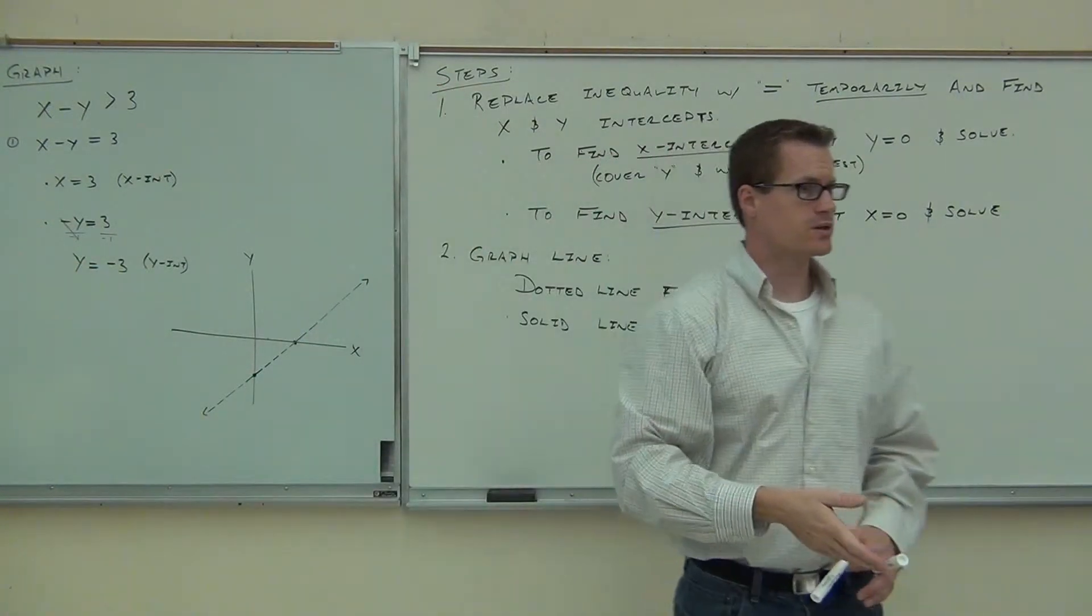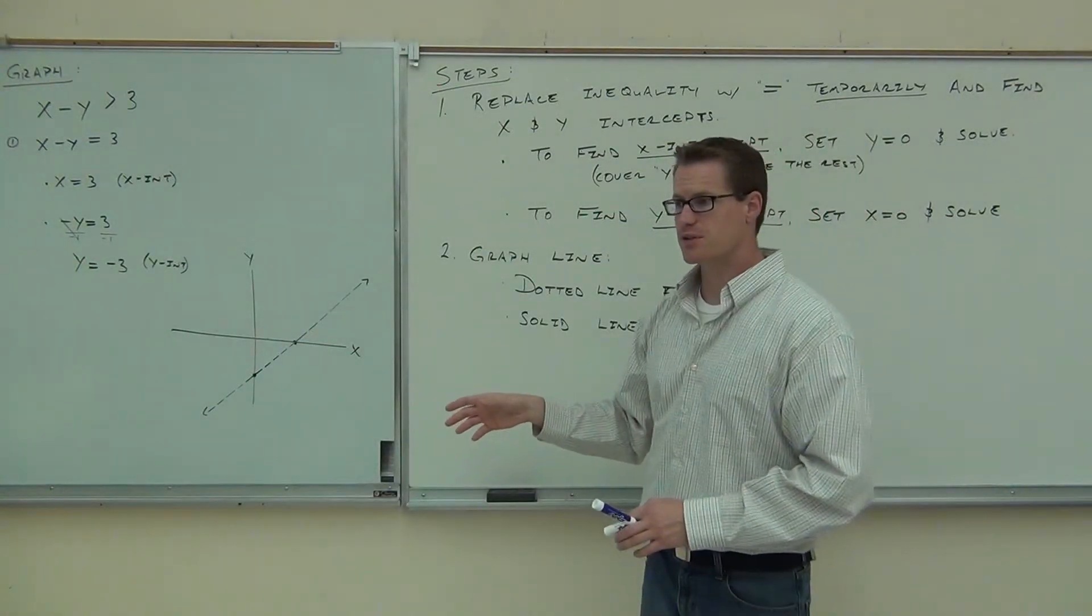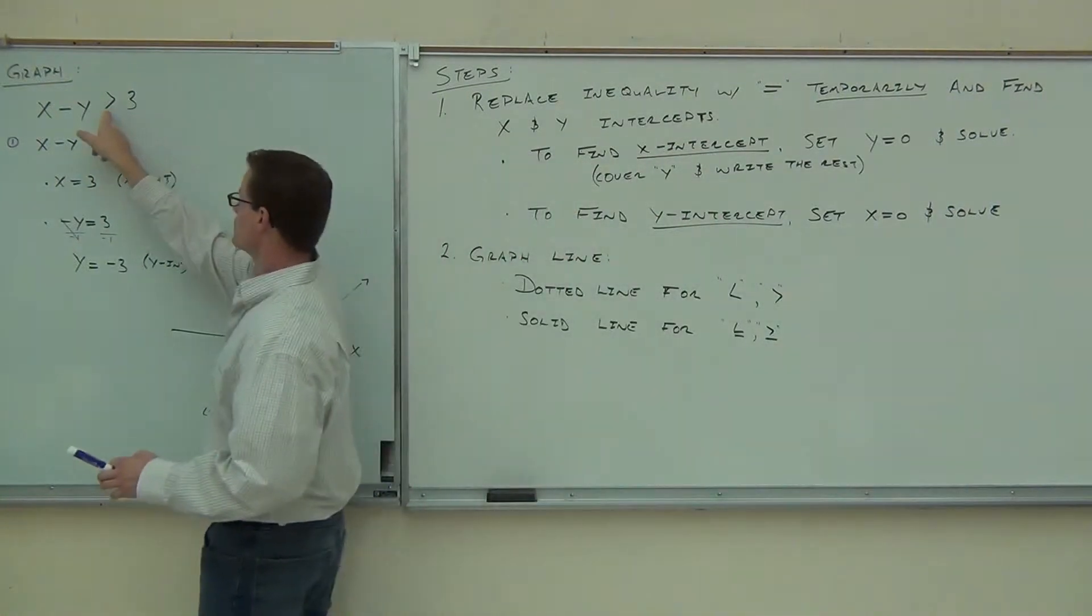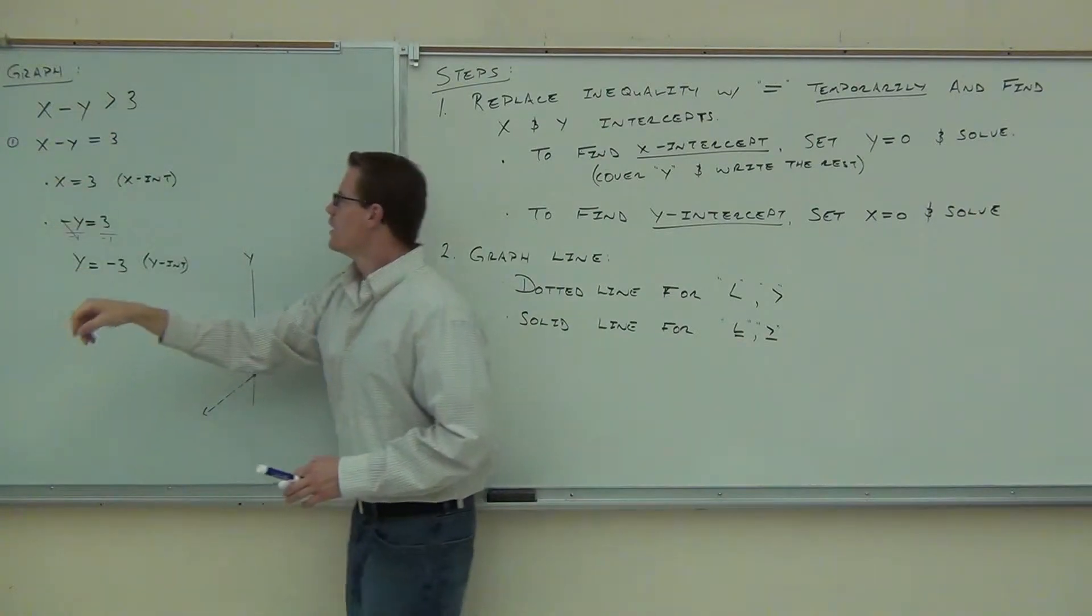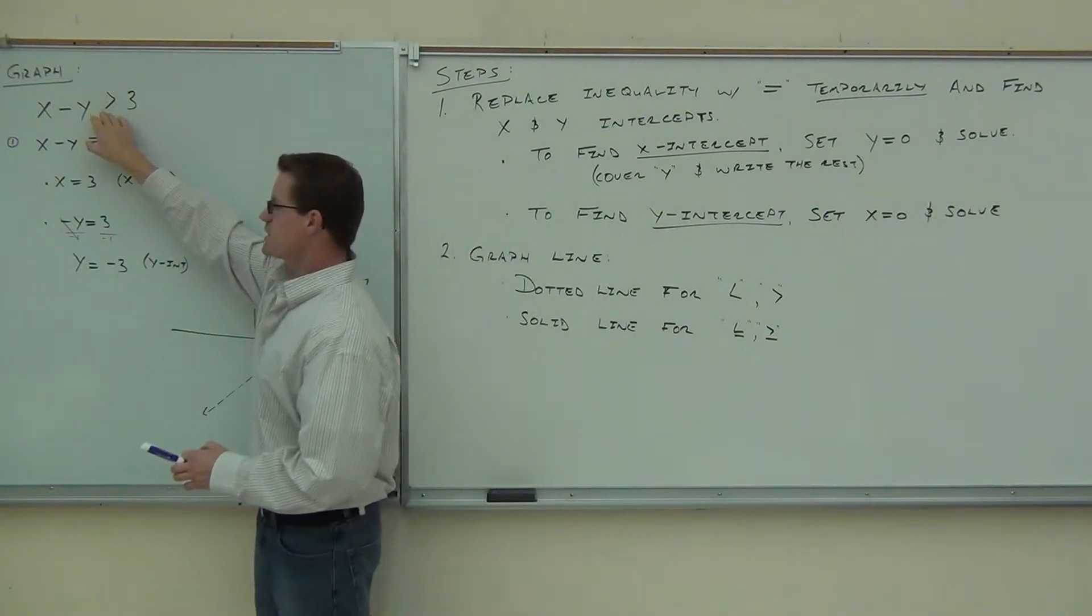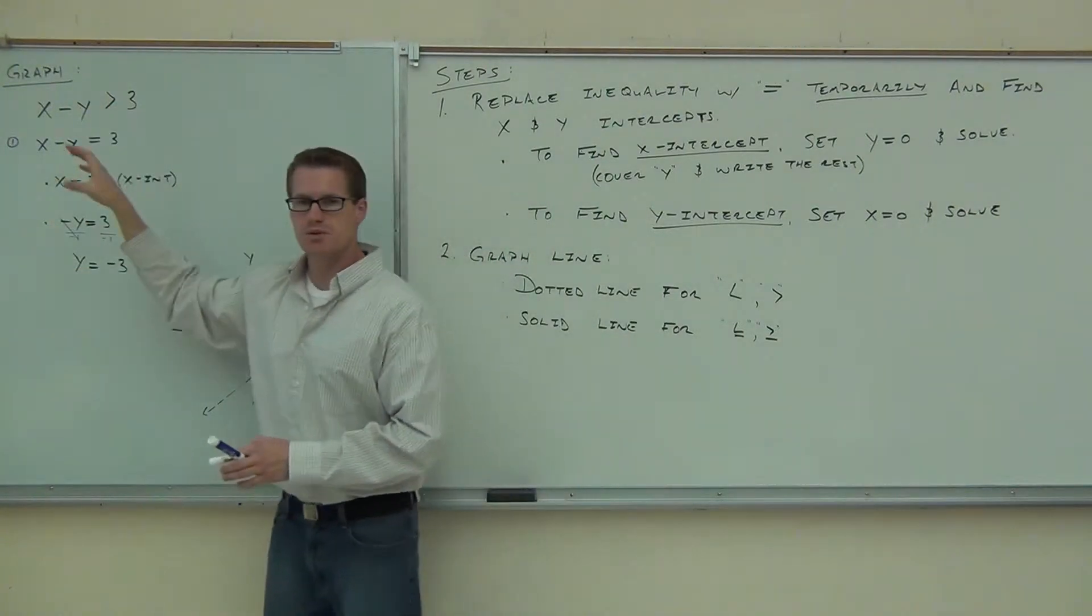Make your line with a dotted or a dashed line if it's not equal to. This is why we don't use this all the time. We have to go back to this one. If it's equal to, we make it solid. If it's not equal to, then we make it dotted.